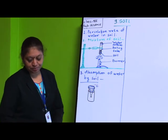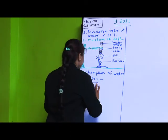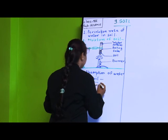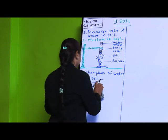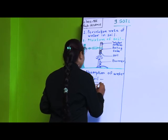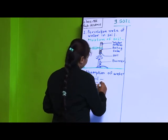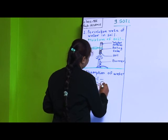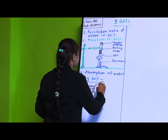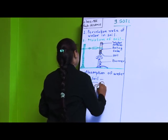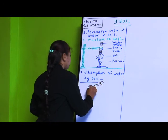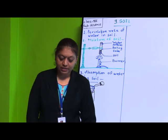Then, with the help of a dropper, you have to add some water into this soil. I have drawn the structure of a dropper here. With this dropper you have to add water drop by drop into this soil. This is the activity to study the absorption of water.